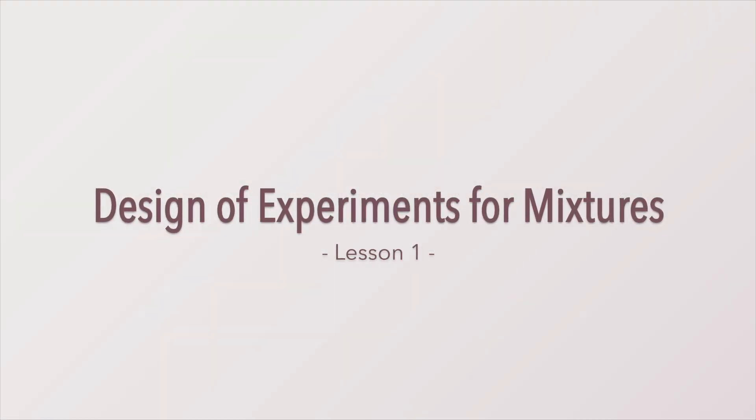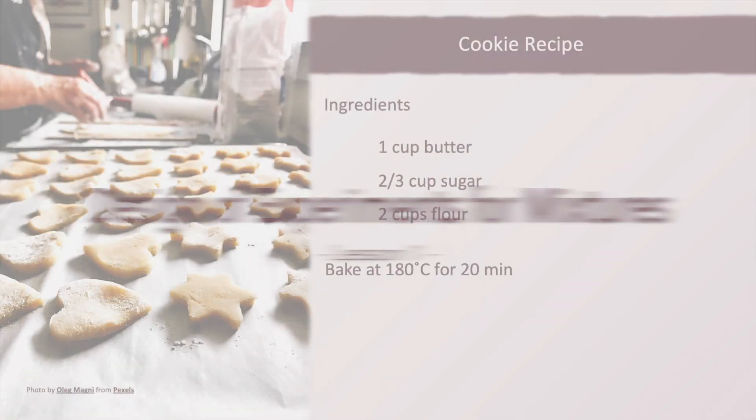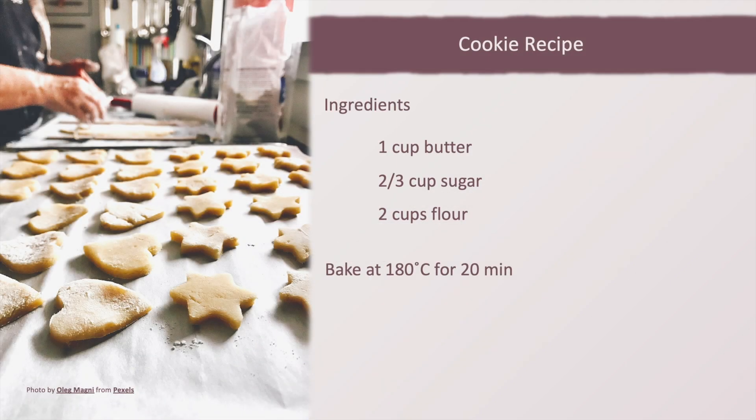To understand the characteristics of mixture designs, let's take the example of the optimization of a cookie recipe. After some tests, the perfect cookie is made with 1 cup of butter, 2 thirds cup of sugar and 2 cups of flour, baked at 180 degrees for 20 minutes.